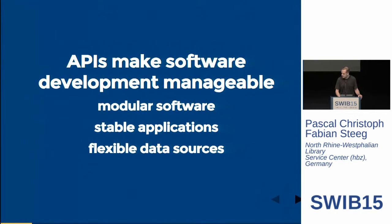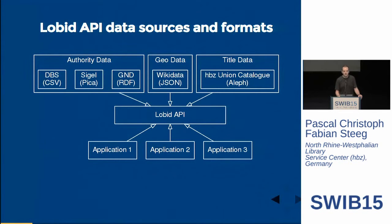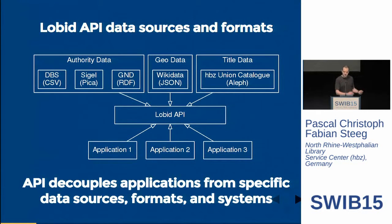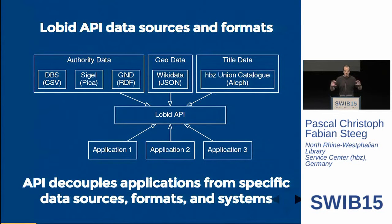Let's take a look at what this means for the Lobbit API. Through the Lobbit API, we make available authority data from different sources in different formats, geodata from Wikidata, and title data from our union catalog. All this data is made available to the applications through this API. The API really decouples the applications from these specific data sources, formats, and systems. So these systems, formats, and sources can change without requiring applications to change at the same time, because the API provides this decoupling.